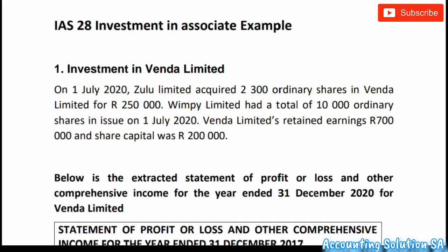IAS 28 is the foundation of IFRS 10. Now the question is: if the company is owning less than 50 percent, which standard do we have to apply? If the company does not have control or does not have power over the other company, which standard do we refer to? Today you are going to get the answer — we refer to IAS 28. When we talk about IAS 28, we are talking about a company that owns shares which is less than 50 percent — it must be 49 or less. In normal circumstances, if you are not given any other information, the percentage must be between 20 percent and 49 percent.